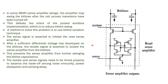In some SRAM sense amplifier designs, the amplifier may swing the bit line after the cell access transistors have been turned off. This defeats the intent of the pulsed word line implementation, which is to reduce bit line swing. A method to solve this problem is to use a bit line isolation technique. The sense line is asserted to initiate the sense amplifier. After a sufficient differential voltage has developed on the bit lines, the isolate signal is asserted to isolate the sense amplifier from the bit lines. This prevents the sense amplifier from further swinging the bit line capacitance. The isolate and sense signals need to be timed properly to balance data noise immunity, power dissipation and sensing delay.